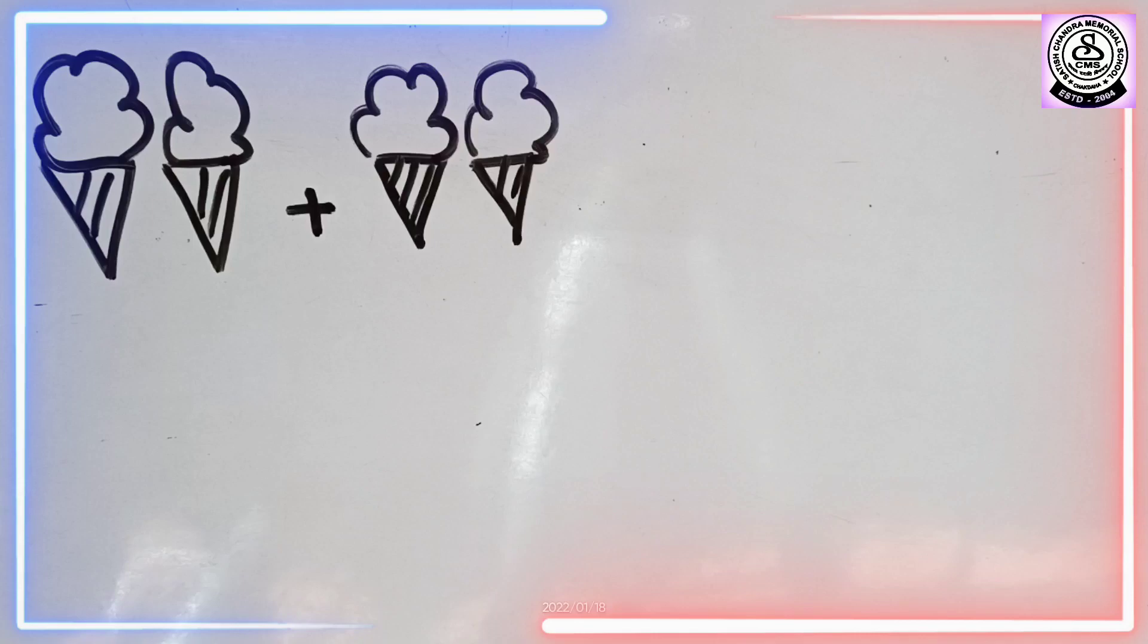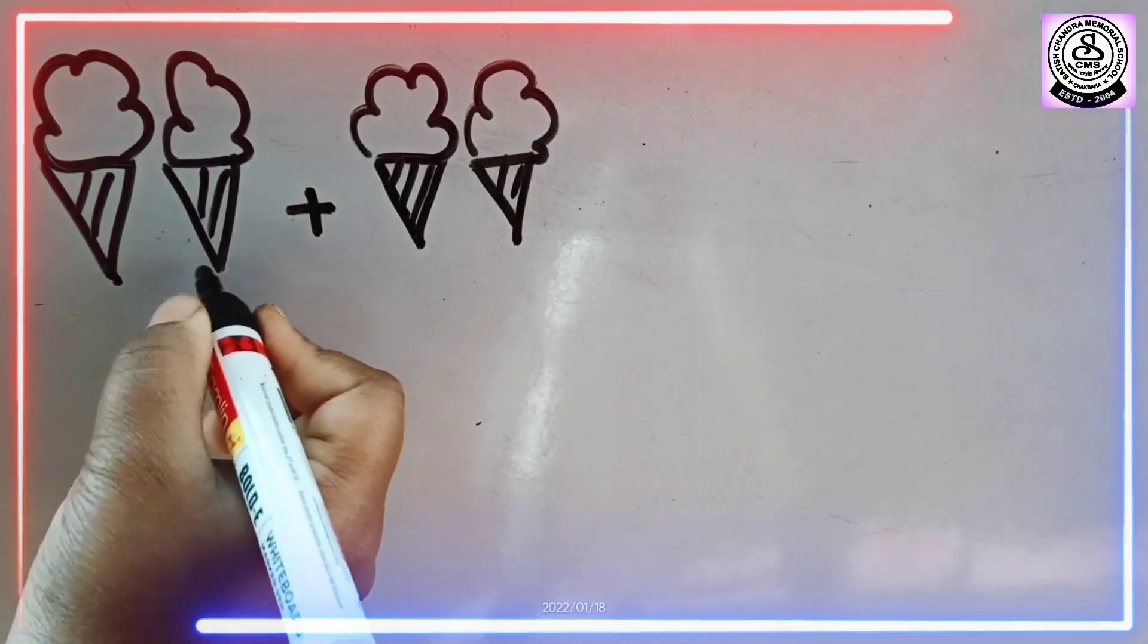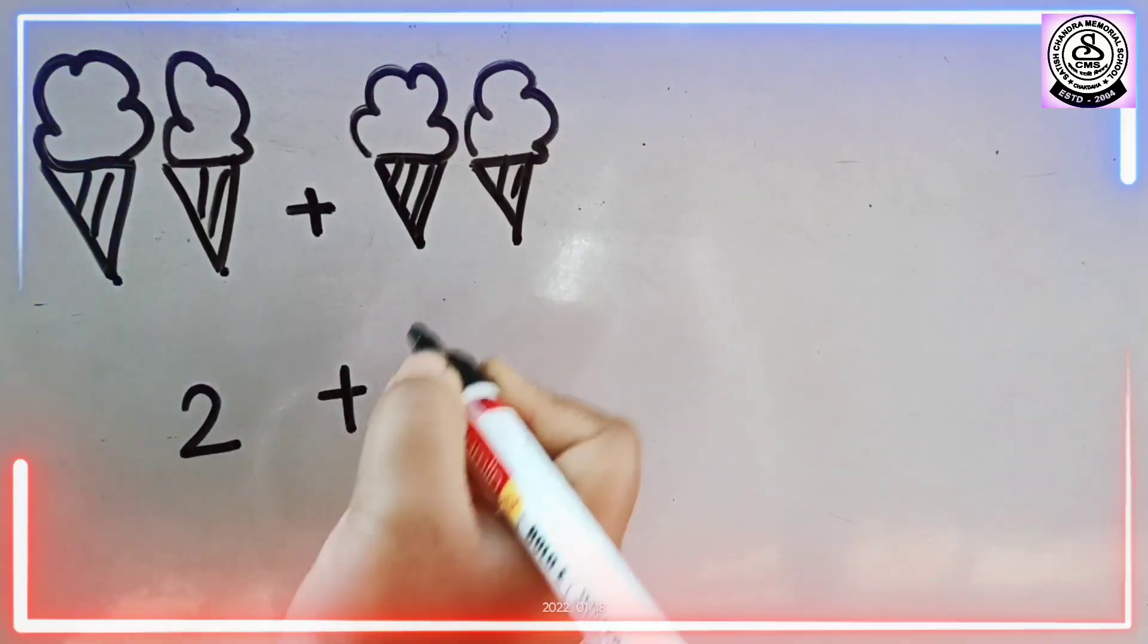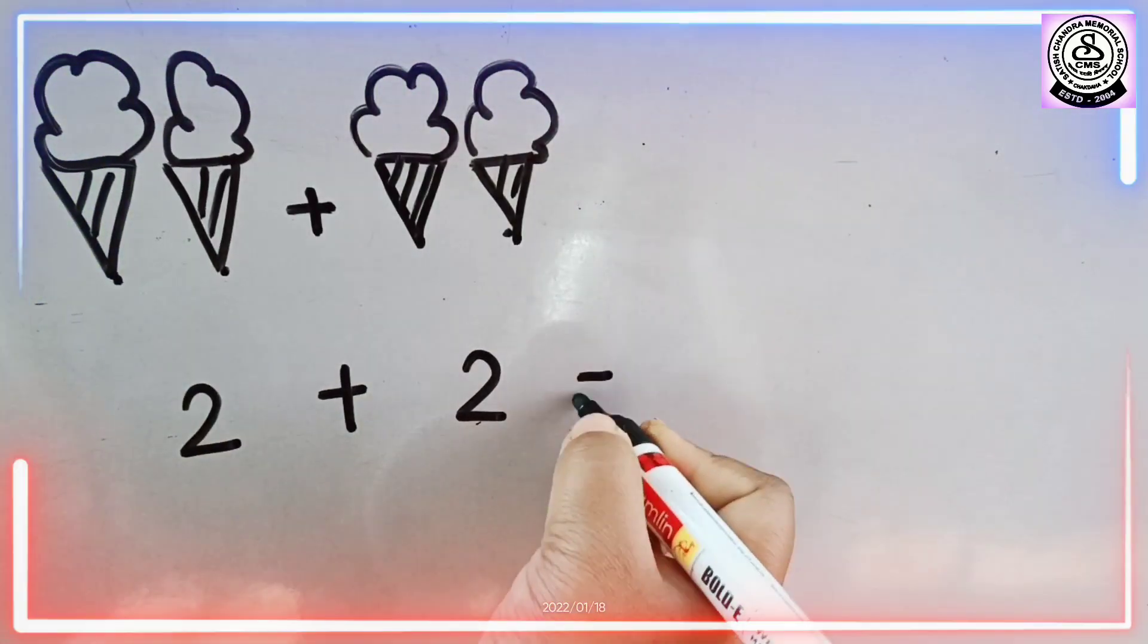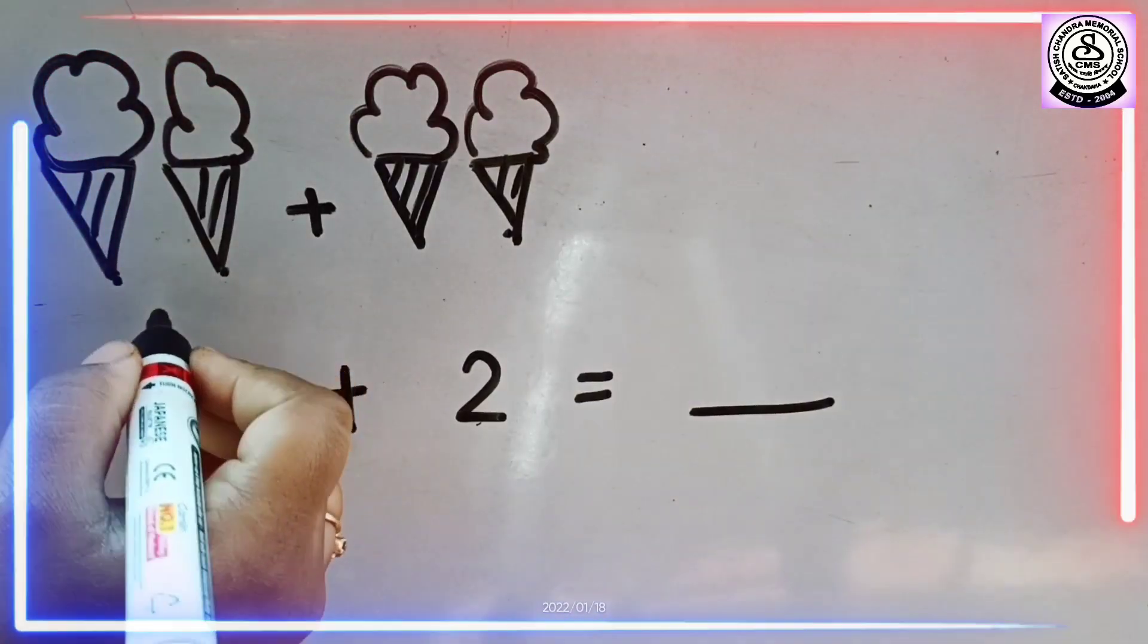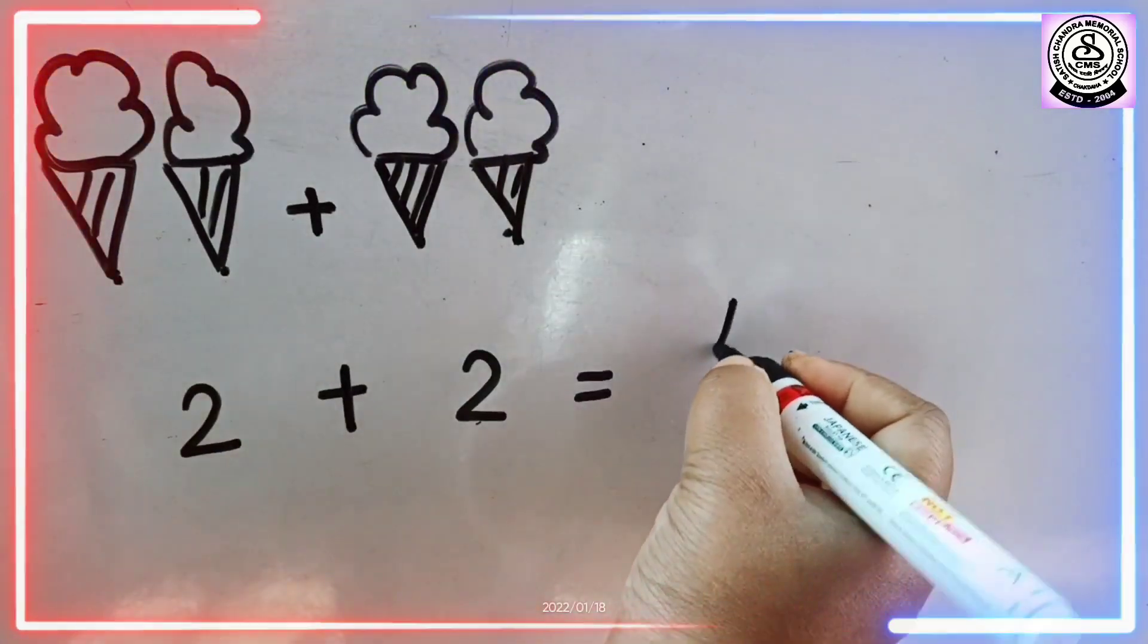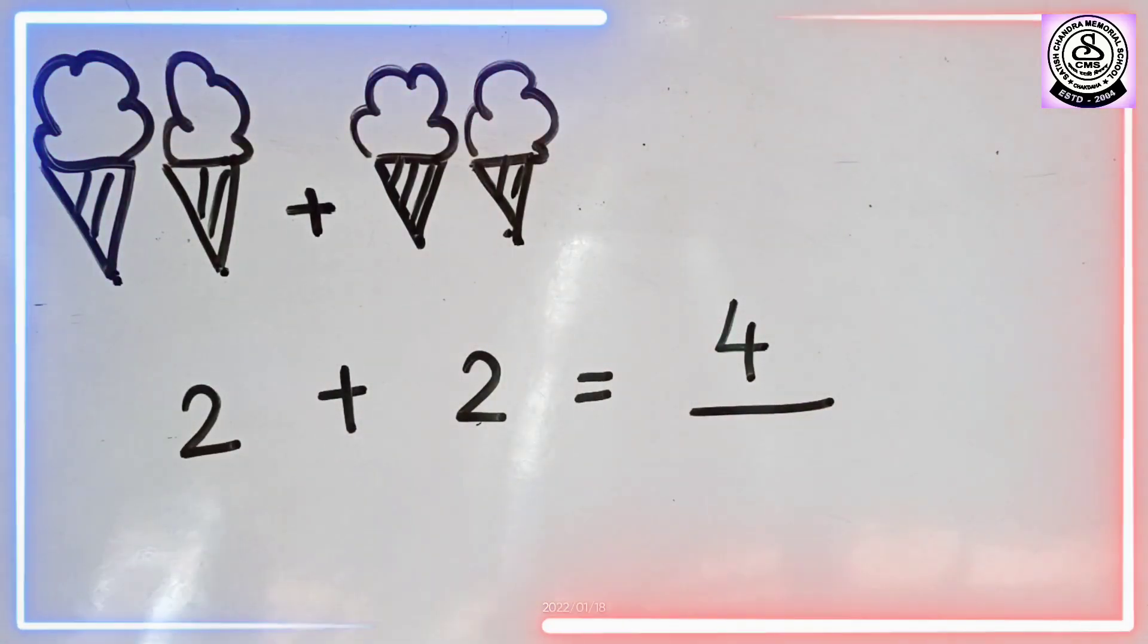Now let's count. So here how many ice creams I had before in the fridge? 1, 2. So 2 plus. How many ice creams did my brother gave? 2. So 2 plus 2 equals to. So here we have 2, 3, 4. So I have 4 ice creams in total.